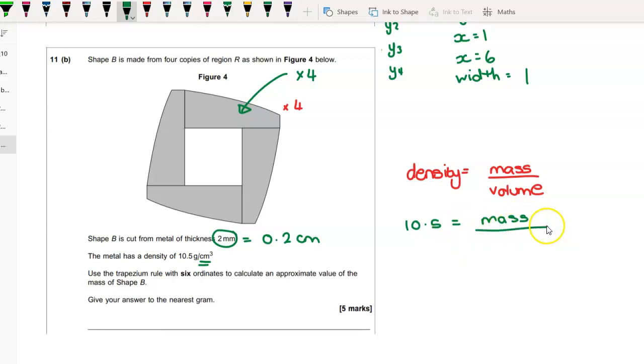You've got your density which is 10.5 grams per centimeter cubed. We don't know what the mass is, but you will know what the volume is by then. So you do 10.5 times your volume and that will give you the mass, which is what you're after in grams, to the nearest gram.